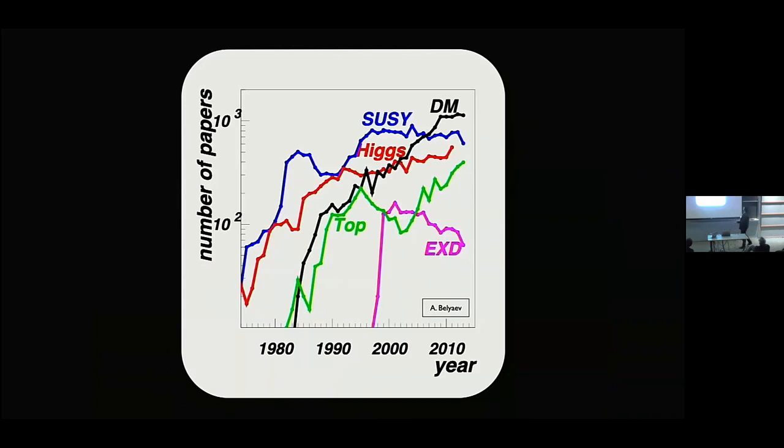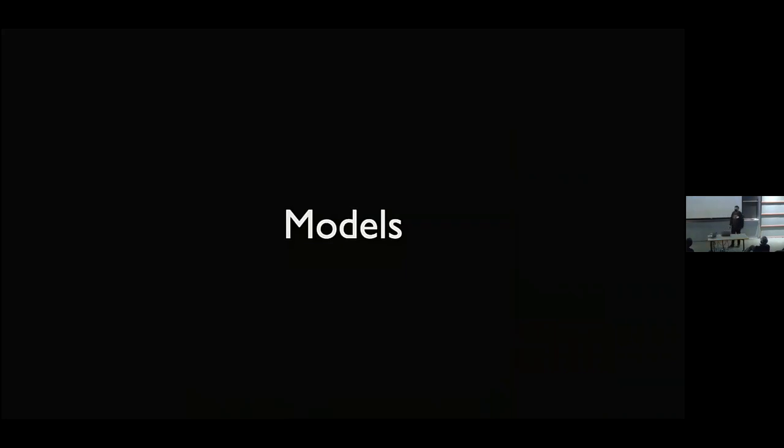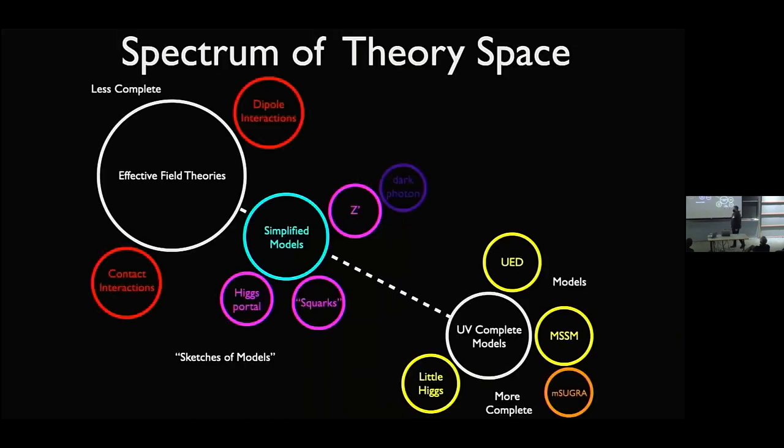There's a lot of theoretical activity. This is a plot that Sasha Belyi made of papers on the archive of different topics. Dark matter, of course, is something that is going very strong. I think you cut it off about here because probably the Higgs went through the roof at this point. So the meat of what I want to talk about has more to do with how we think about constructing models of dark matter, where this is gone and where it's going. And I think it's a very interesting story that has a lot of lessons for Snowmass.